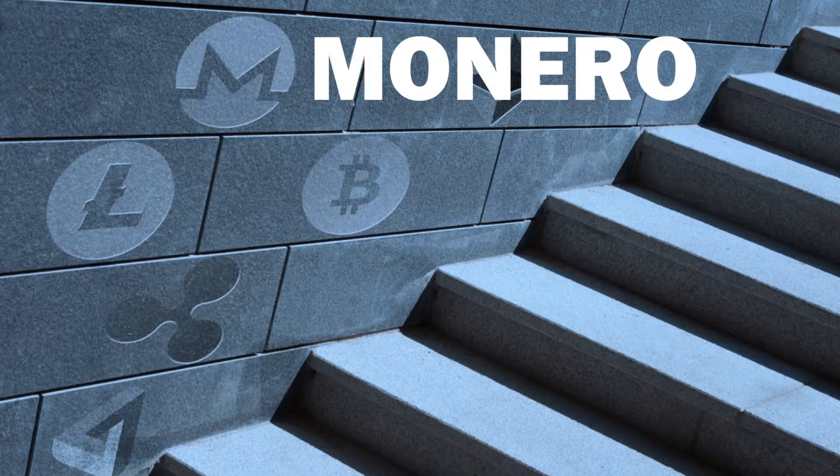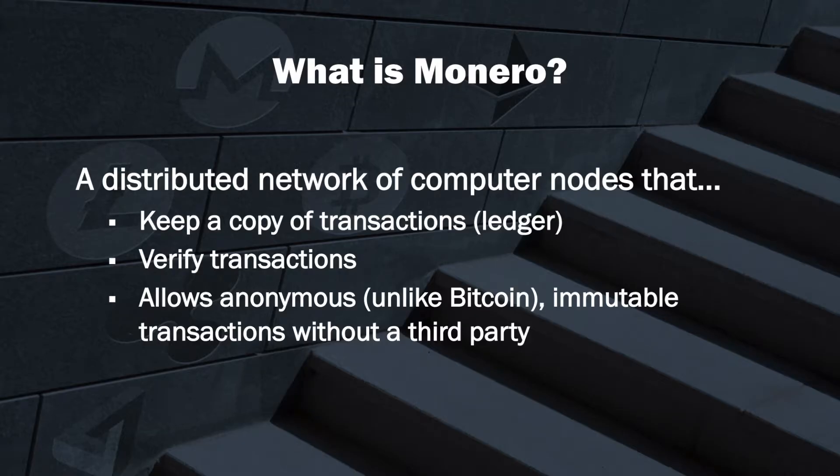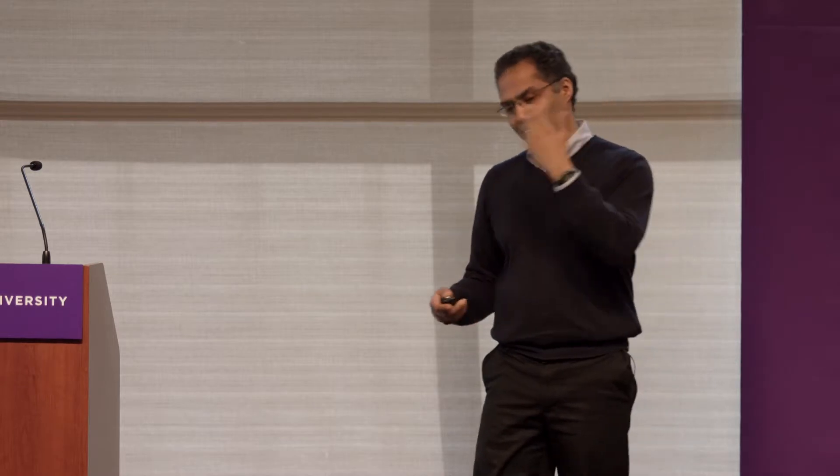The digital infrastructure example I want to share is called Monero — it's a competitor to Bitcoin. If Bitcoin is anonymous, Monero is even more anonymous. It's a distributed network of computer nodes — many computers connected to each other — that each keep a copy of transactions. If you give someone Monero or someone gives you Monero, that record of the transaction is kept on many nodes, and you can use those nodes to verify the transactions. As long as a certain number of those nodes say it's correct, it's correct. It allows anonymous, untraceable transactions. These are immutable and encrypted — one node can't change this — so you can trade without a third party. It's completely community-used and maintained.